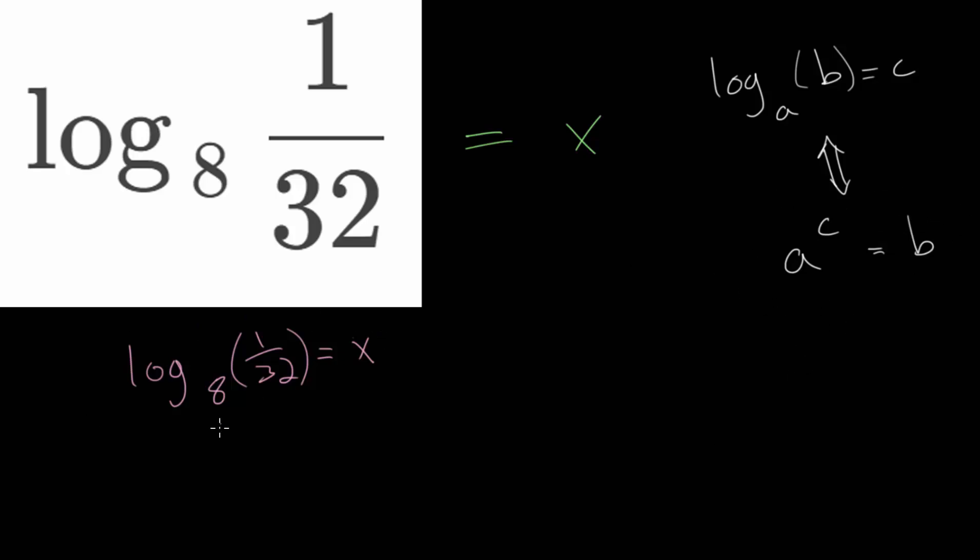So let's rewrite this. The exponential form would have the same base, base 8. And the exponent is what the logarithm is equal to. So it will be 8 to the x power. And the input of the logarithm is what the exponential equation is equal to.